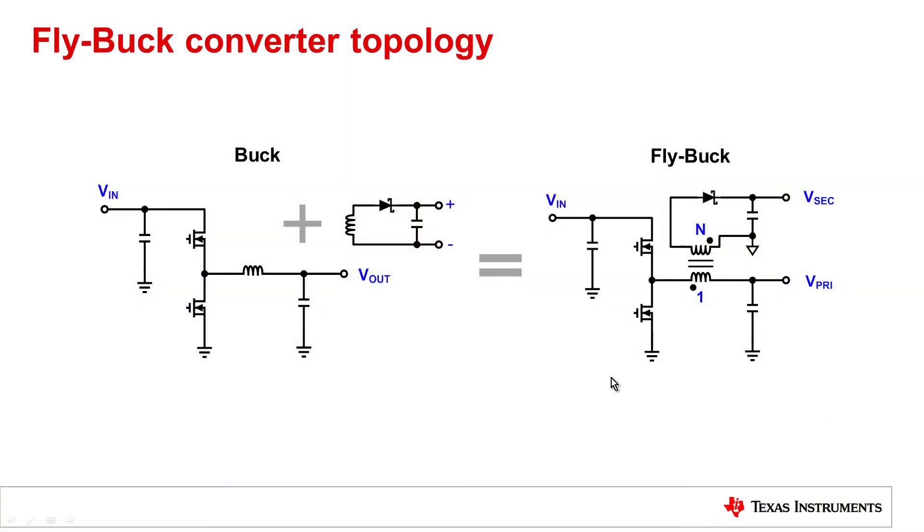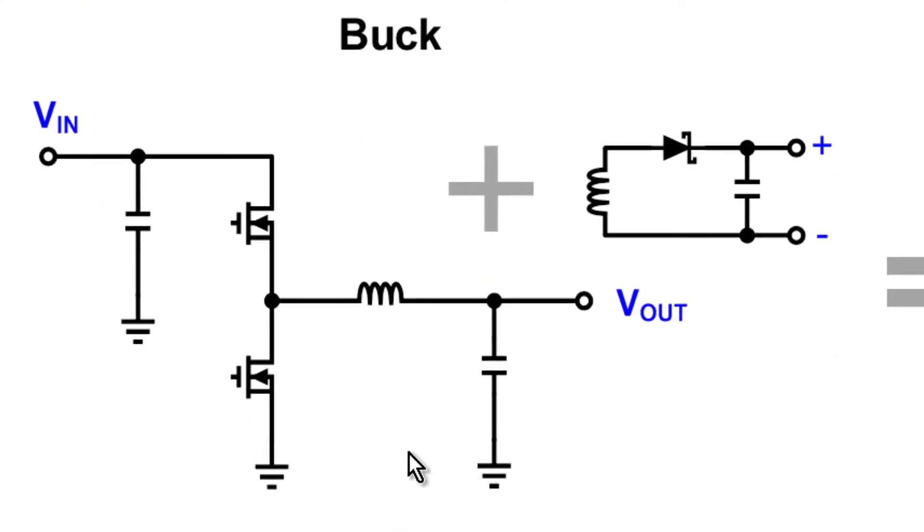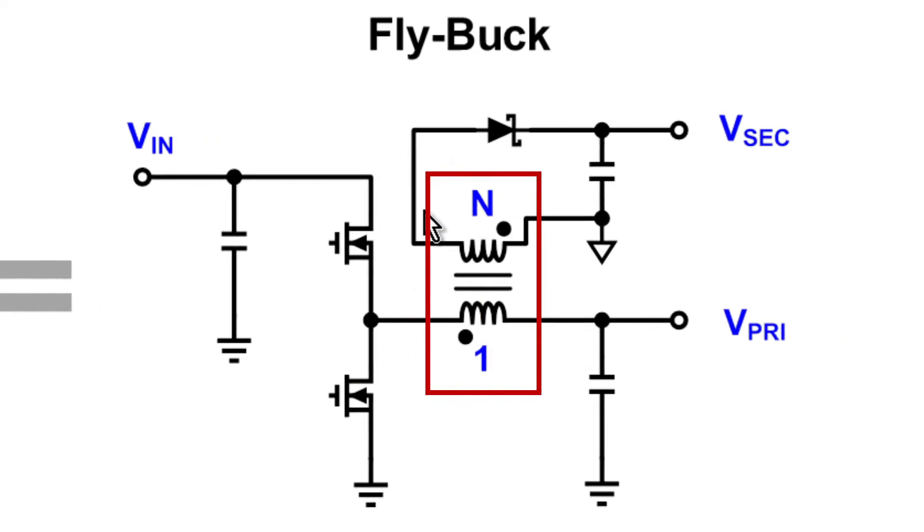So what is a flyback converter? Let's look at the topology first. The flyback is developed from a traditional buck regulator by adding a flyback-like secondary side. By changing the buck's inductor into a transformer, we can get isolated output from the buck converter, and we call this topology flyback.